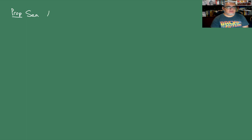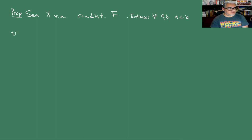Ahora vamos a ver cómo podemos describir ciertas probabilidades usando la distribución, y esto lo vamos a usar como auxiliar en lo que sigue. Tomamos una variable aleatoria con distribución F. Para cualquier A y B que cumplan que A es menor que B, tenemos las siguientes propiedades. La propiedad 1: la probabilidad de que X sea menor que A es el límite por la izquierda de F cuando x tiende a A.